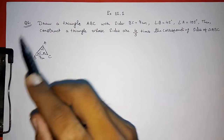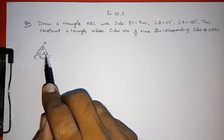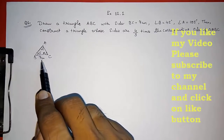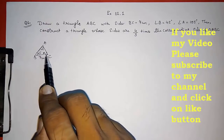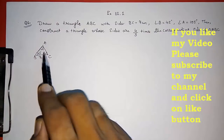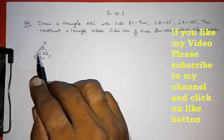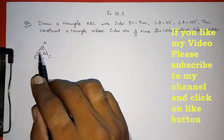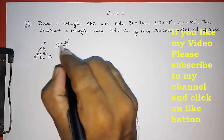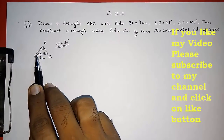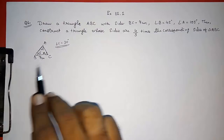Otherwise, what we can do is find the third angle C. If we find angle C, we will get two angles and the side between them, and then we can construct triangle ABC. We know the sum of all angles is always 180 degrees, and the sum of angle A and angle B is 150 degrees. So 180 minus 150 gives angle C equal to 30 degrees. Now we know angle B is 45 degrees, angle C is 30 degrees, and the side between them BC is 7 centimeter, so now we can construct triangle ABC.